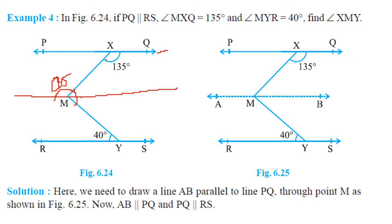The corresponding angle to 40 degrees gives us 40 degrees on that side. Now, if one angle is 135 degrees, then the supplementary angle on the straight line will be 180 minus 135, which equals 45 degrees.